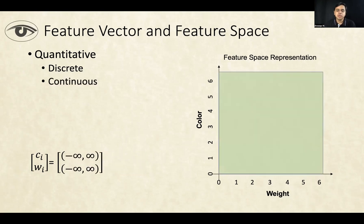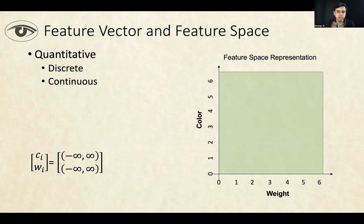You can also have continuous features, where it's not necessary that the feature vector falls exactly at these integral locations — it can be anywhere in the feature space. In this particular example, both weight and color are positive, but in general it could be positive or negative. It can be uniformly spread in whatever range of values it can take.